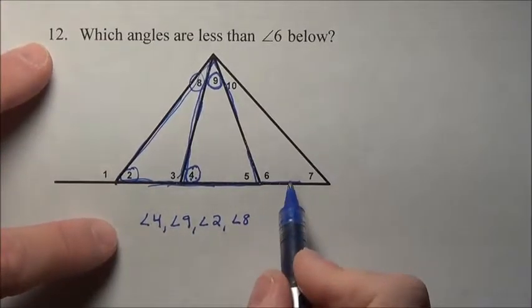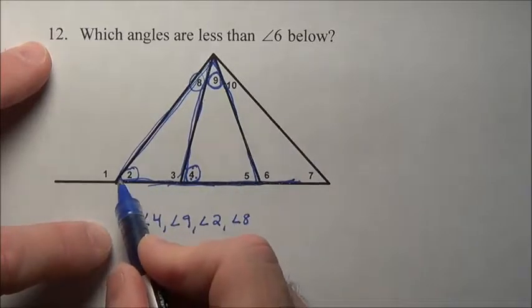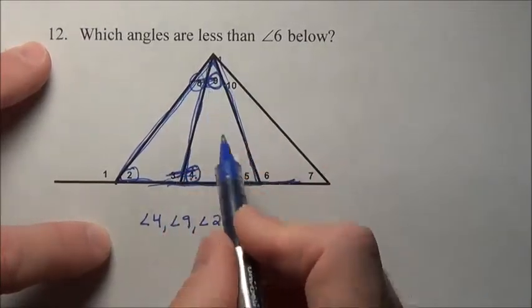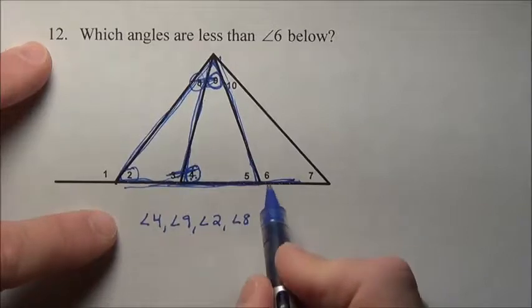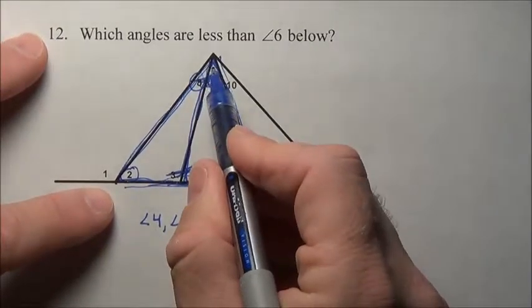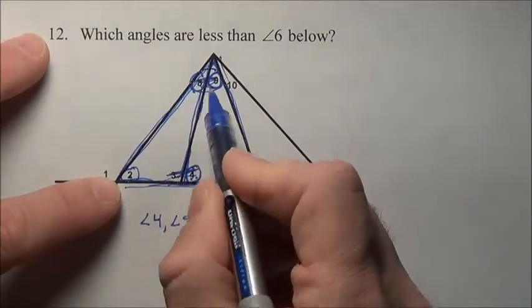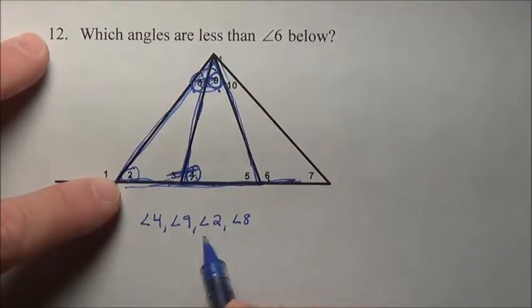The other way you can do it is you can just imagine one triangle right like this, blocking out this stuff here. And you can see that 6 has got to be bigger. It's an exterior angle to both these two and this one, so 6 would be bigger than 2 and 8 and 9 individually, which we've already listed.